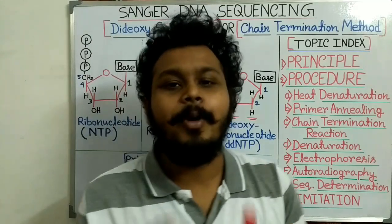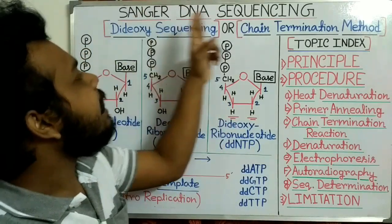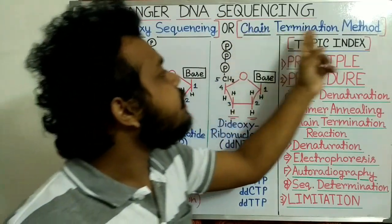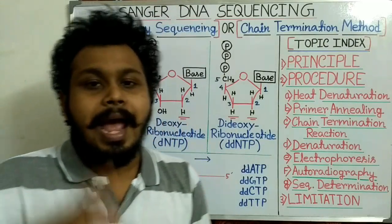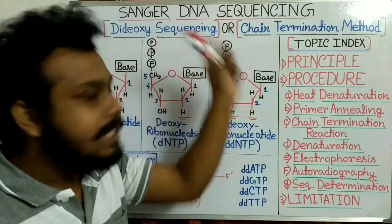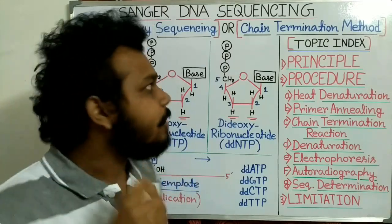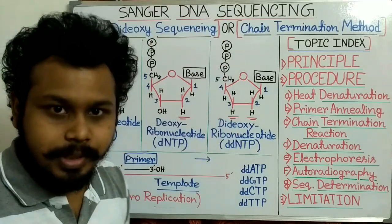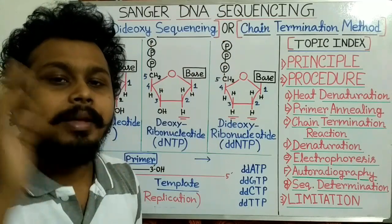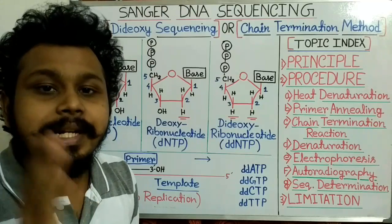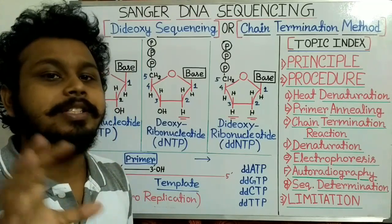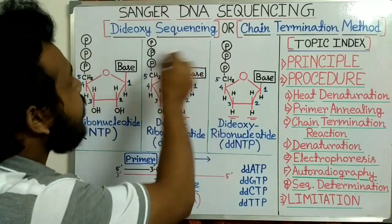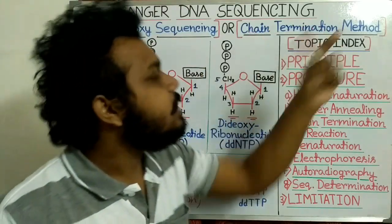Hello friends, today in this video I am going to discuss about the Sanger DNA Sequencing, which is also known as Dideoxy Sequencing or Chain Termination Method. Each of these names has some significance. It is called Sanger DNA Sequencing because it was discovered by the scientist Friedrich Sanger.